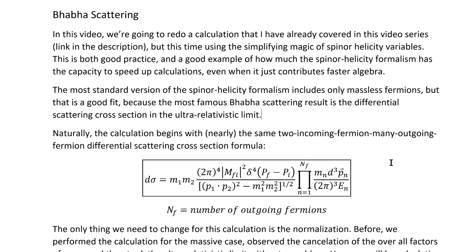In this video, I'm going to redo a calculation that I've actually already done — the derivation of the ultra-relativistic limit of the Bhabha differential scattering cross-section. But this time, I'm going to do it using a new method: the Spinor-Helicity Formalism. The point is to show you the derivation of a result we've already derived via standard technique, so you can compare between the standard method and simplification via the Spinor-Helicity Formalism. We'll see that even when the only thing offered by using Spinor-Helicity variables is faster simplification pathways, it still is a big difference.